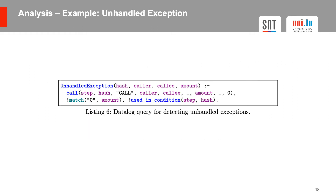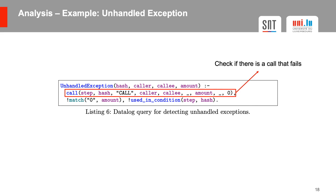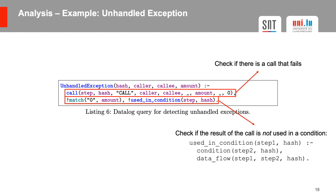In the last example we present a datalog query to detect an unhandled exception. First we check if there is a call that fails. Afterwards we check if the result of the failed call is not used in a condition. This is a datalog relation that detects if data flows from a given execution step into a branching condition that influences the control flow of a smart contract.